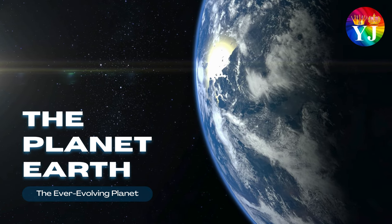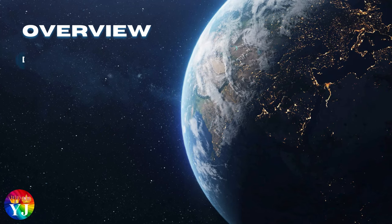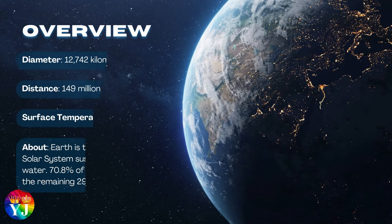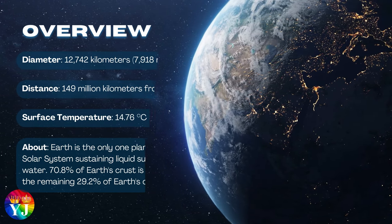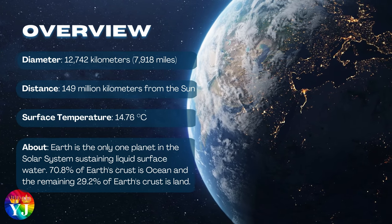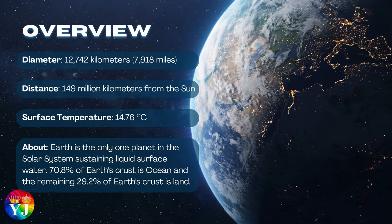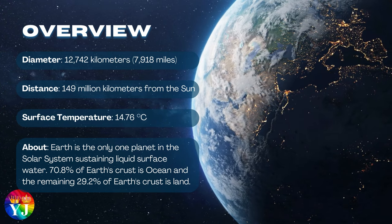The planet Earth, the ever-evolving planet. Overview of Earth: Diameter 12,742 kilometers, Distance 149 million kilometers from the Sun, Surface temperature 14.76 degrees Celsius.